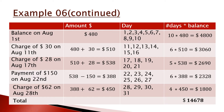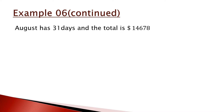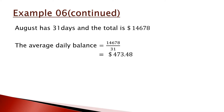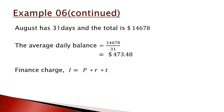Now for step two: divide the grand total by the number of days in August (31). This gives an average daily balance of $473.48. The finance charge is then P × R × T = $473.48 × 0.13 × (31/365), which gives a finance charge of $5.23 for the September statement.